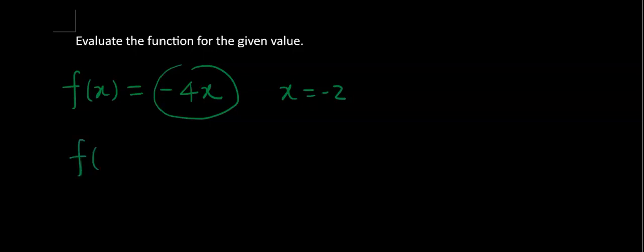In my little function machine, I'm gonna put negative 2 in it. When I see x again, I'm gonna say: x, you are negative 2 now. I'm going to evaluate it. Negative times negative—we're going to have positive 4 times 2, that is 8. We're done with this one.